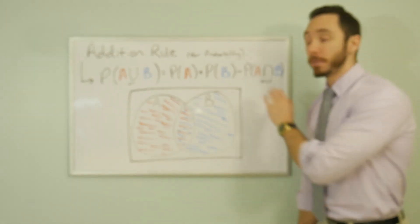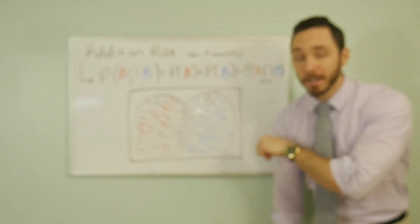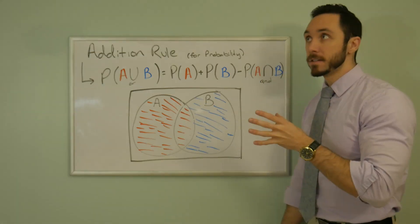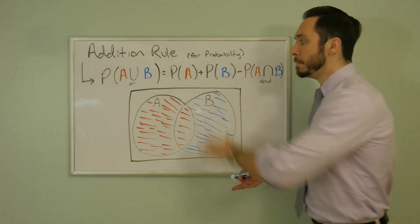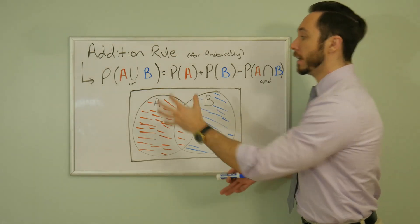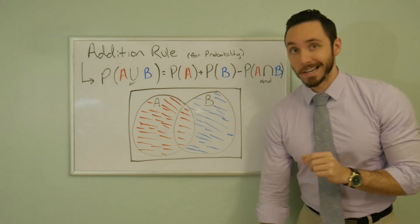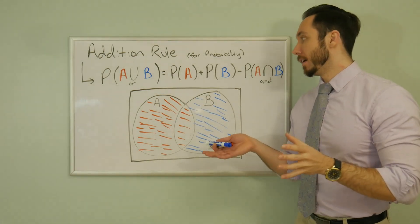So this last part, subtracting off the intersection, is to account for the fact that I counted it twice. I need to erase one of them. You'll now see that the event of liking A or B, this total probability here, is all just shaded in once.